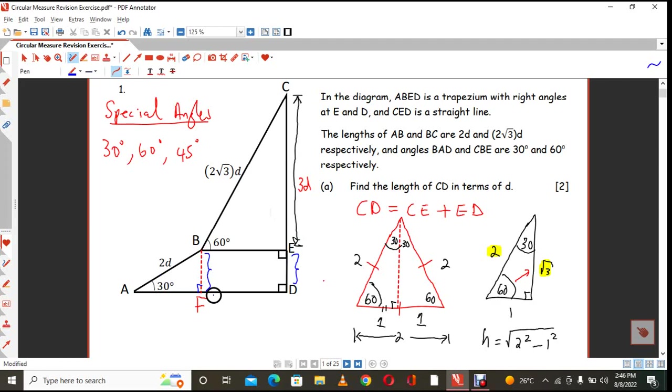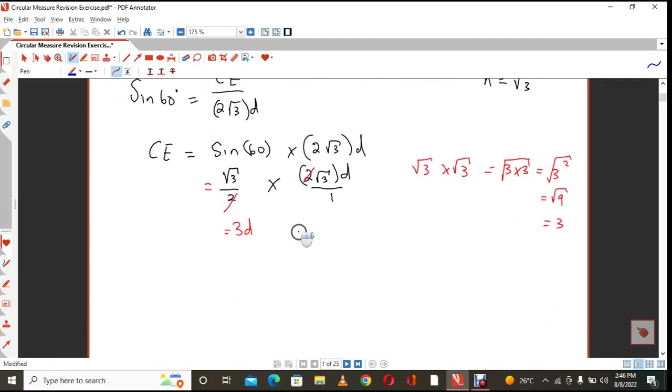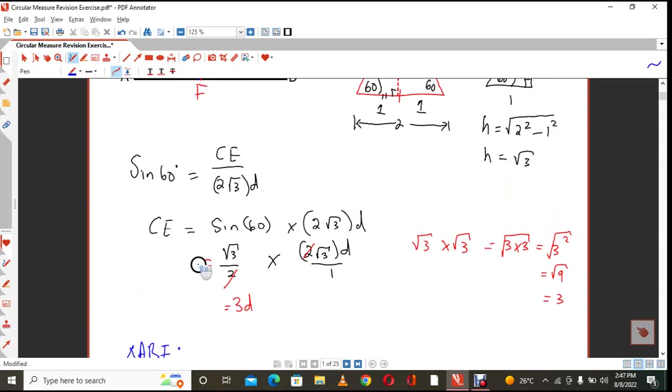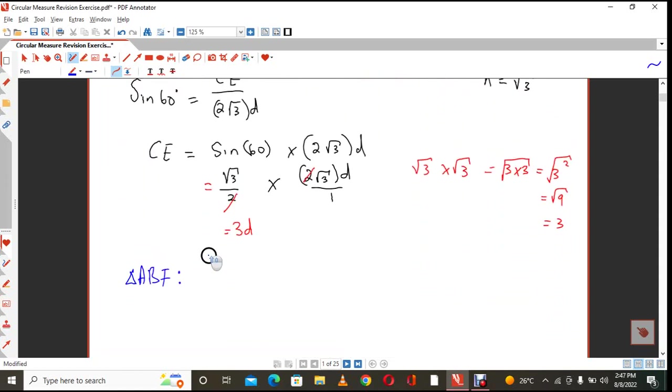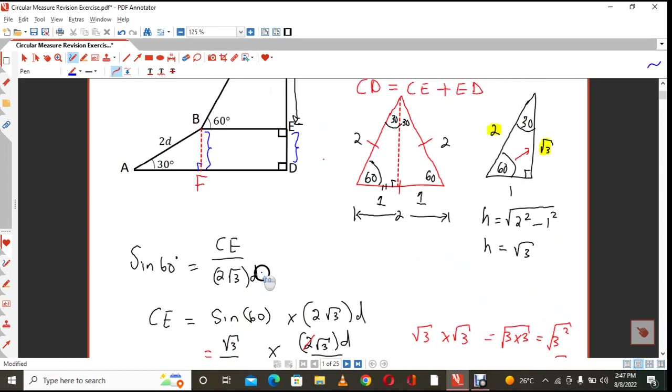And we have the hypotenuse. So again, in triangle ABF, so that is the triangle that we are going to look at. We're going to say the sine of 30 degrees is going to equal to, go back to our diagram, BF, which is the same as ED.